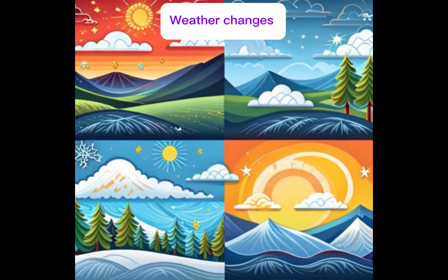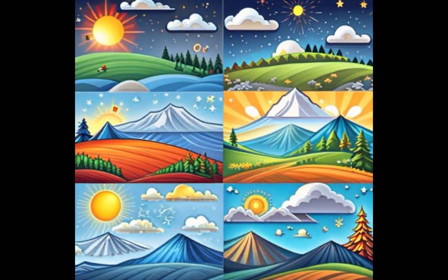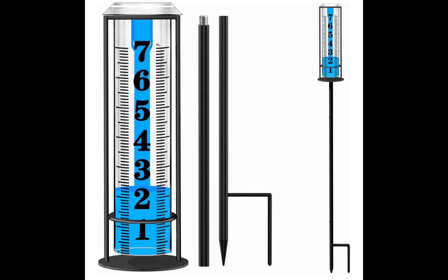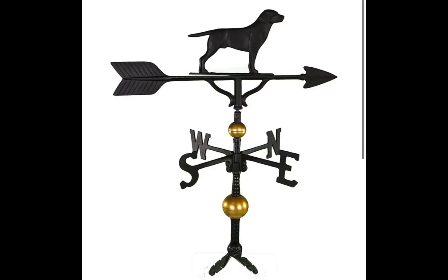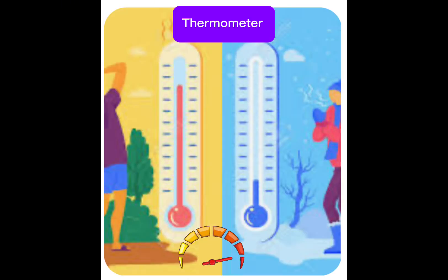Weather changes are characterized by differences in wind, temperature, and precipitation. Did you know that there are instruments that can be used to measure and record weather, like this rain gauge, weather vane, or thermometer?